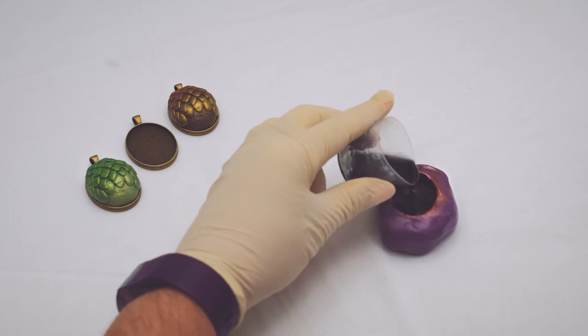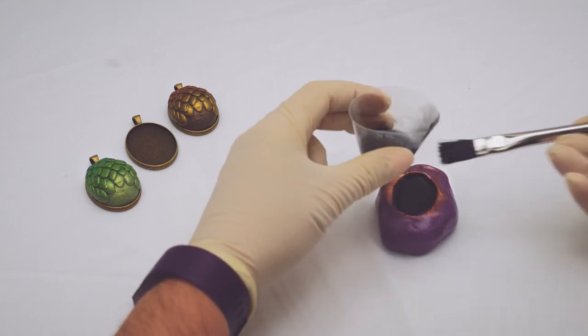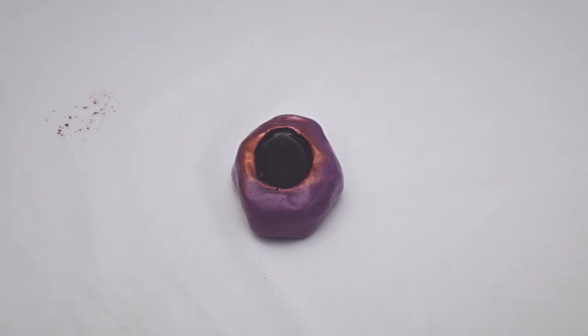Pour the resin into the egg, stopping just below the top of the mould. It will take about 10 to 15 minutes for the resin to cure. You'll see it change in colour from black to grey.